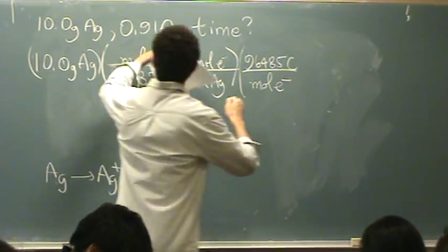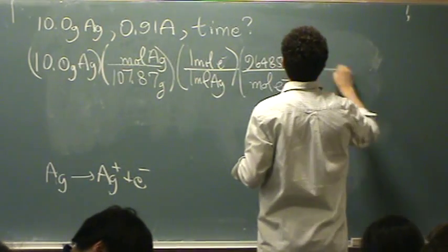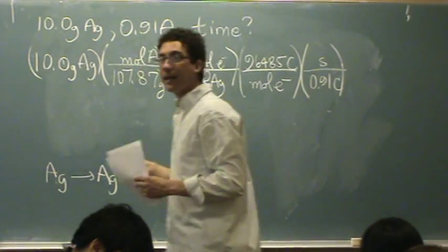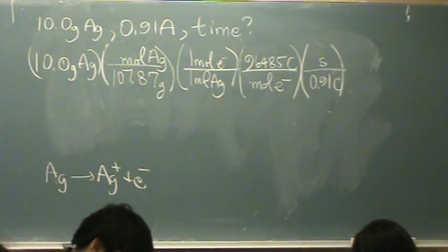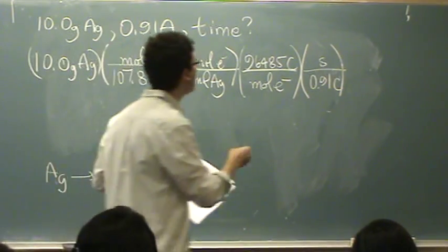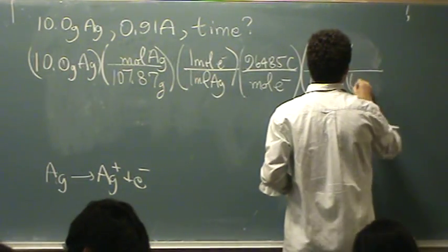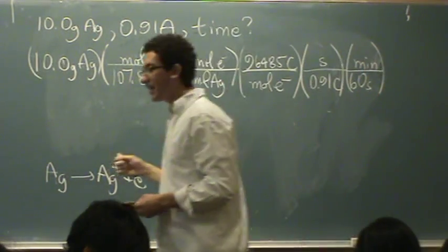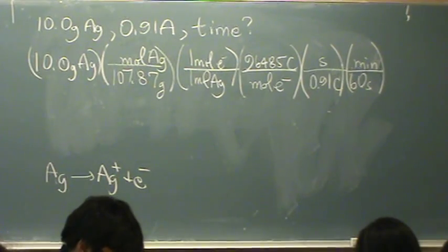Now I can use this amperage here, which is 0.91 coulombs per second. Now I'm in time. I can change that to minutes, which I have to do because it says how long in minutes. So there's 60 seconds in a minute. I calculate that number, but that's not my answer.